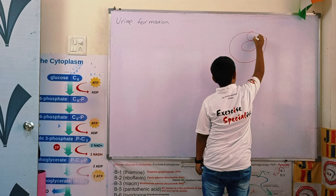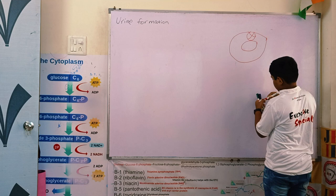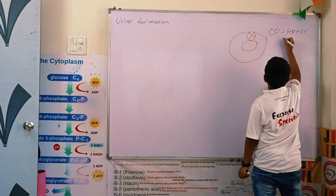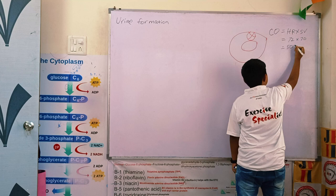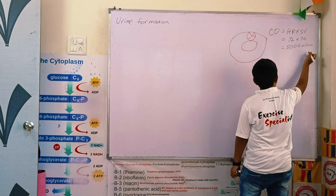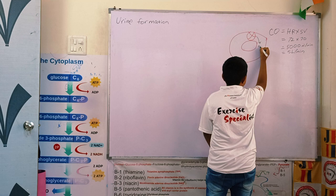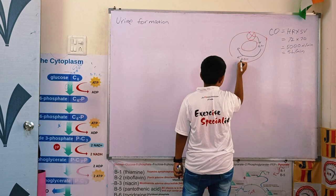Cardiac output equals heart rate into stroke volume. Our heart rate is 72 into 70 stroke volume, giving a total of 5000 ml per minute, which equals 5 liters per minute. So the heart pumps 5 liters per minute. When this 5 liters moves through the body, 20% of it — meaning 1 liter — goes to the kidney.